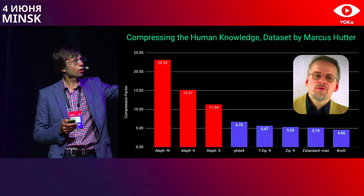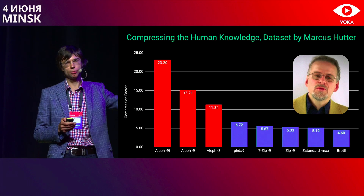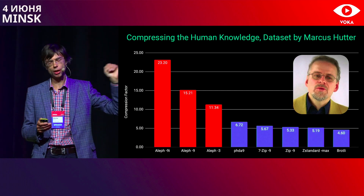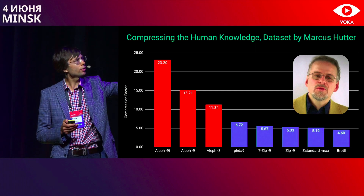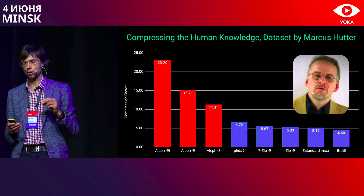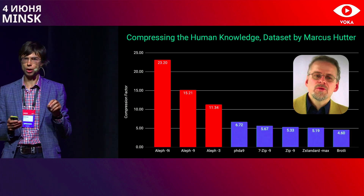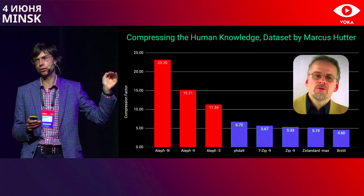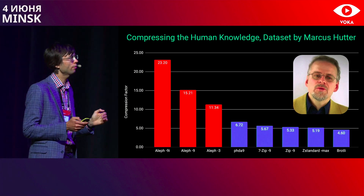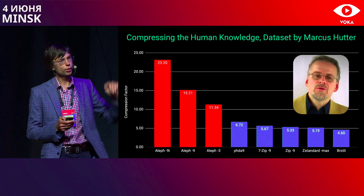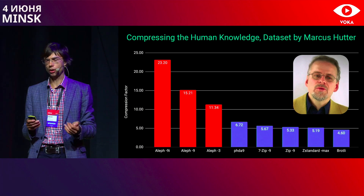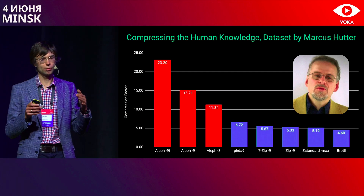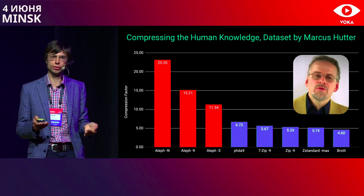There are three variants shown here. Aleph 3 is a high-speed compressor which doubles the compression time. Aleph 9 is the version we used for the benchmark test, achieving a 15x compression factor. And finally, Aleph 9i is an academic compressor — quite slow, but it gives you the theoretical limit of how much human knowledge can be compressed.